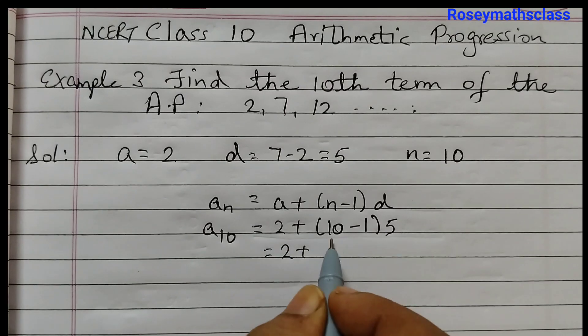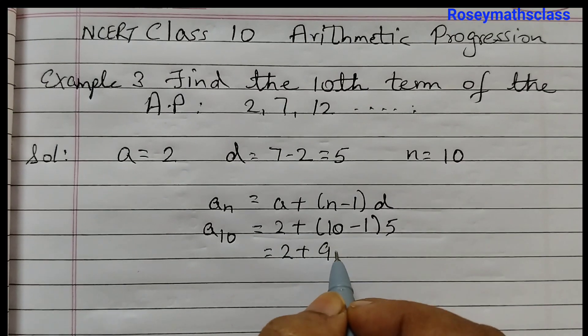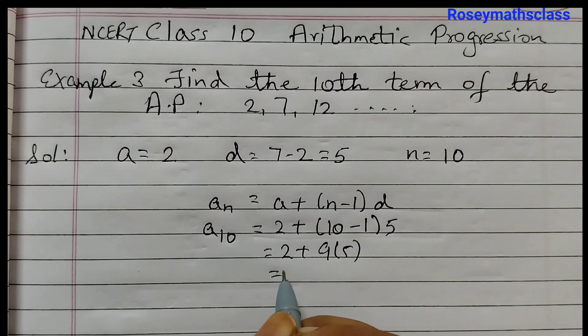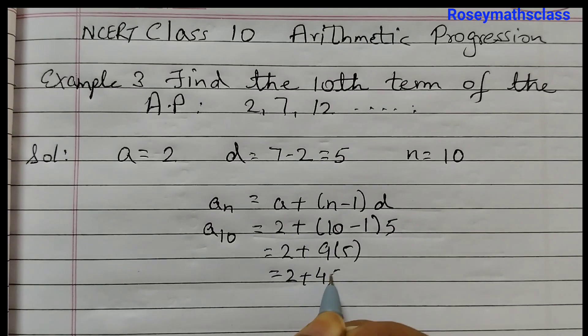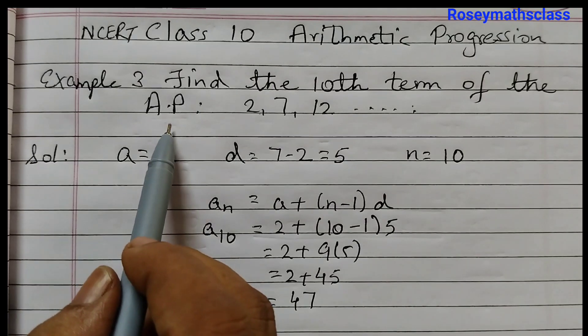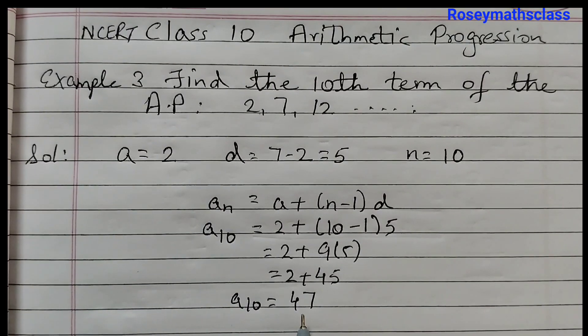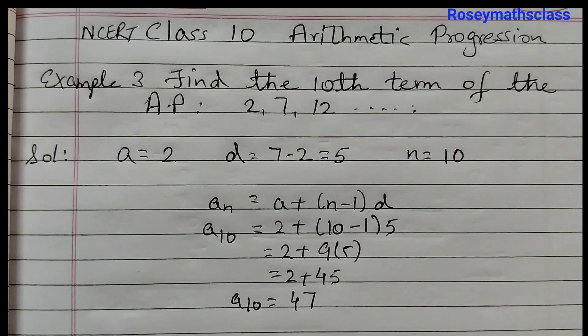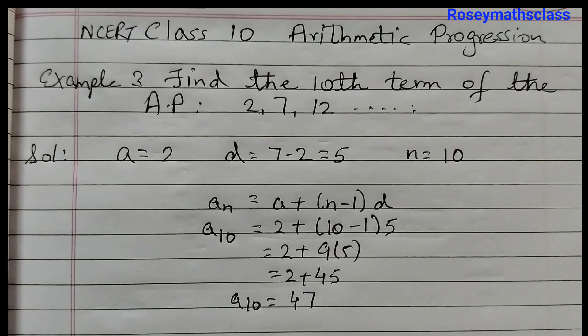Okay, we will calculate now: 2 plus, 10 minus 1 is 9, 9 into 5, 2 plus 9 times 5 is 45, and that equals 47. So the 10th term of this given AP is 47. Thank you.